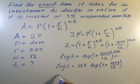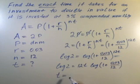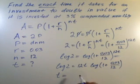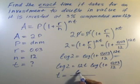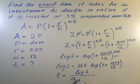Let's solve for T, and we get T = log(2) / (12 × log(1 + 0.03/12)).